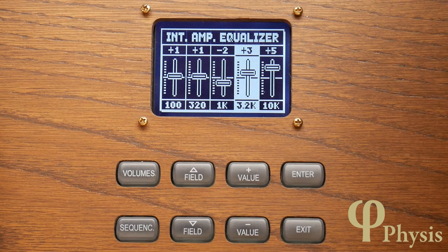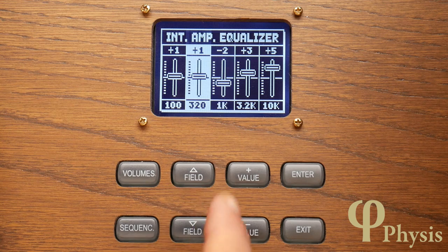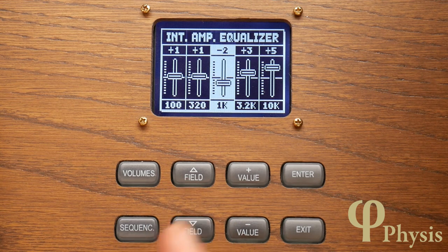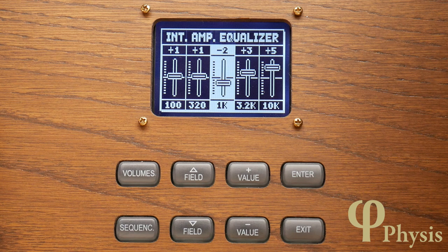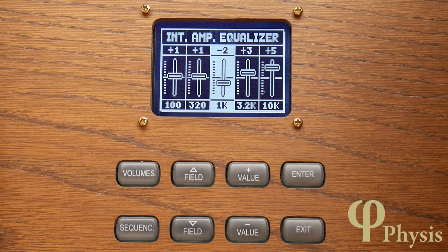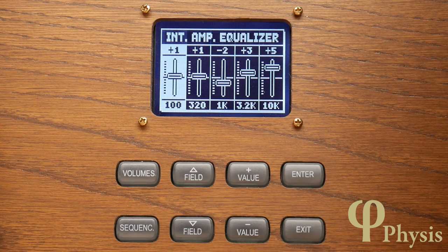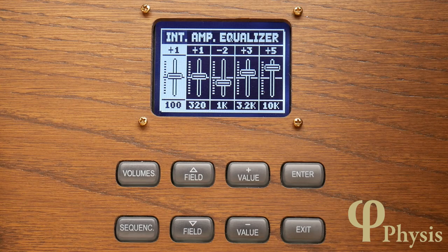The middle frequency sliders such as 320 and 1 kHz will affect the hardness and honkiness of the organ tone. Think of vowel sounds like OR and R. And then the low frequencies like 100 Hz will affect the warmth and the roundness of the sound.